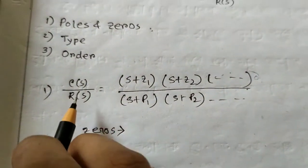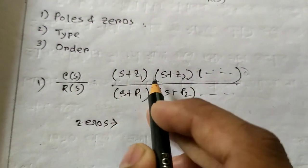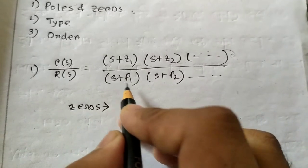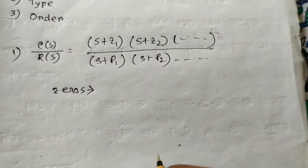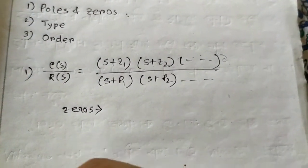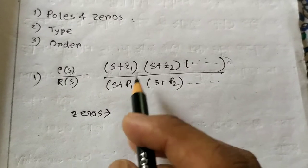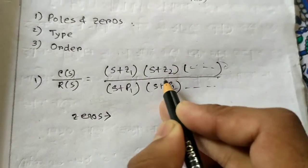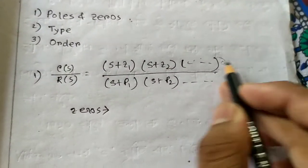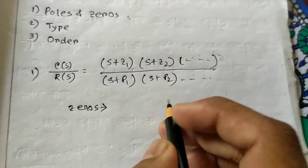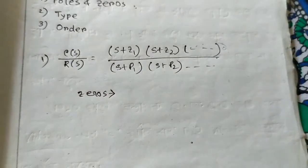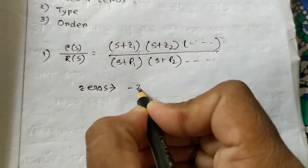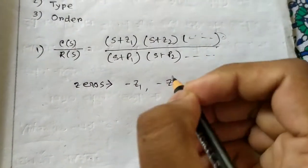If we write the transfer function CS by RS, say the numerator is given in the form (S + Z1)(S + Z2) and so on, and the denominator is (S + P1)(S + P2) and so on. The first point is zeros. For which values does the transformation become zero? If we make any term in the numerator zero, the overall transfer function becomes zero. These values are called zeros, so here the zeros will be minus Z1, minus Z2.